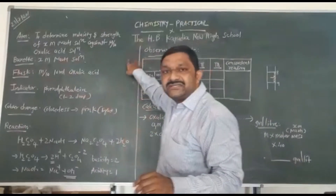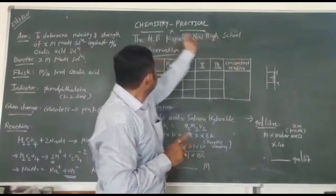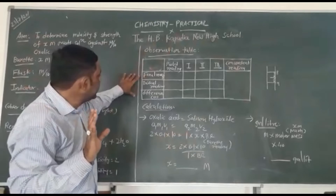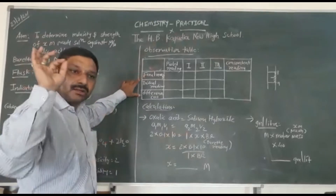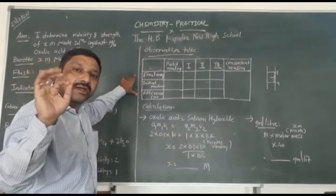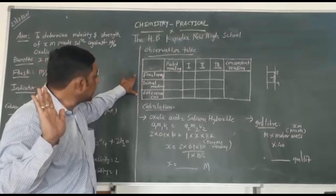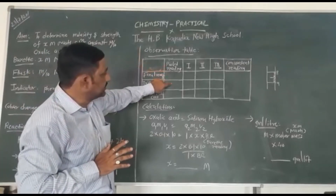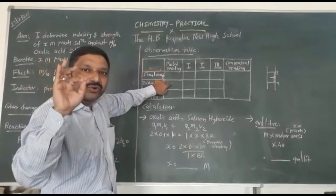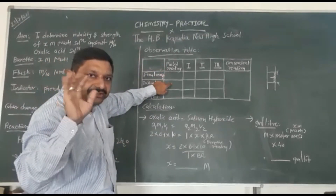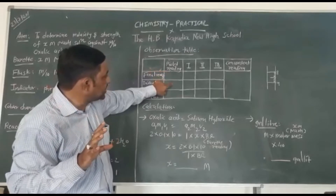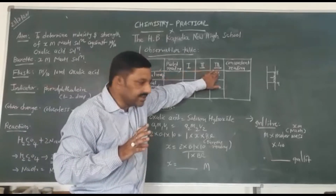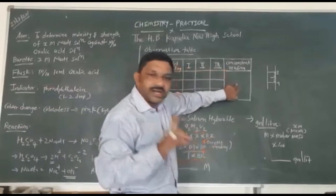Here is your observation table — you have to write this table in your examination as well. The first entry is your pilot reading, which means an approximate reading. Then you record the first reading, second reading, third reading, and finally your concordance reading.